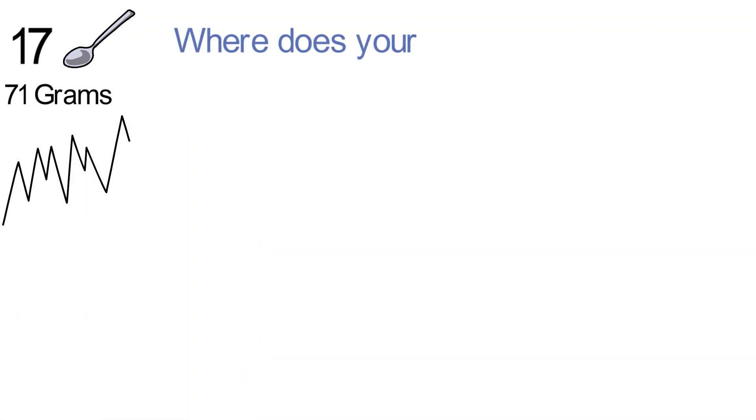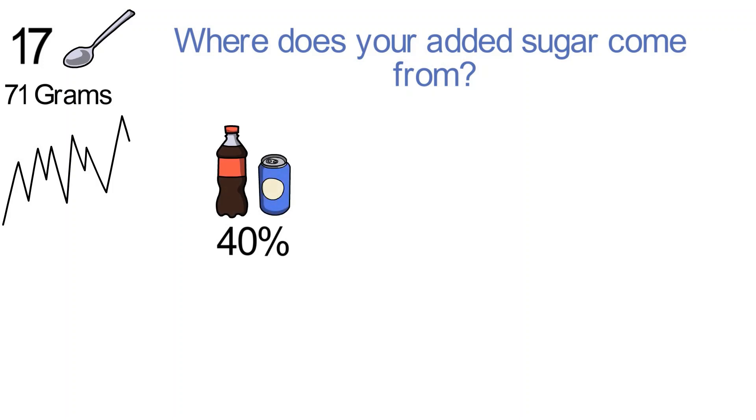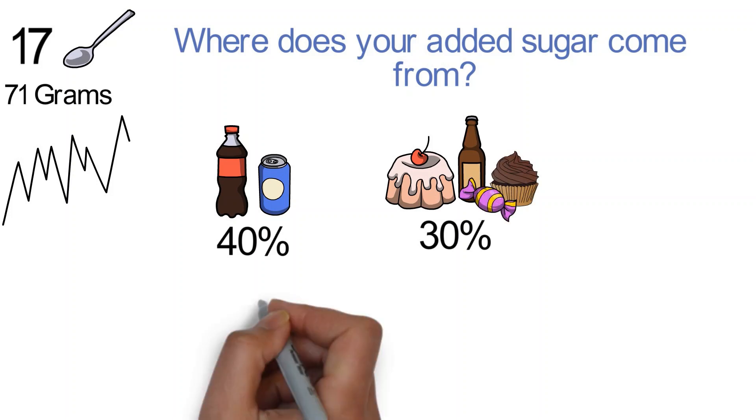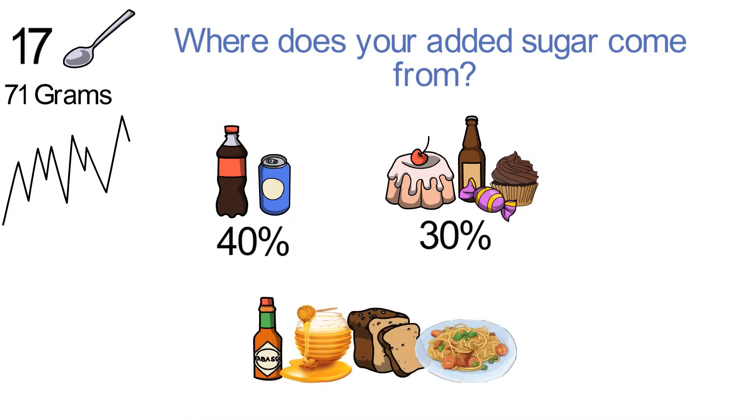So where does your added sugar come from? 40% comes from soda and energy drinks. 30% comes from grain-based desserts, fruit drinks, dairy desserts, and candy. And the rest of it comes from foods such as syrup, honey, bread, pasta, or sauces.